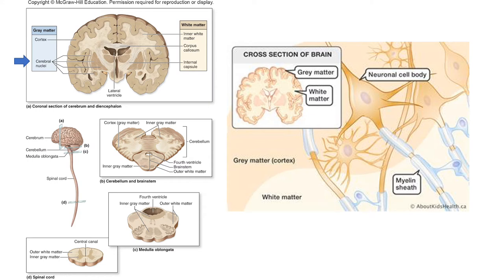These cerebral nuclei are clusters of cell bodies — we call them nuclei within the CNS. This isn't like nuclei of a cell. Also note that a clustering of cell bodies within the peripheral nervous system is called ganglia; now that we're in the CNS, we call these nuclei, and we'll talk about them in the following lecture. Within the gray matter, we have the neuronal cell bodies and the dendrites. When we transition to white matter, we have the axons, which the myelin sheath gives a white appearance.